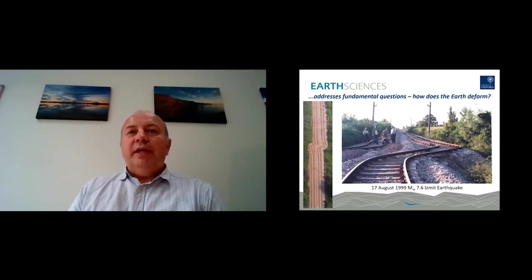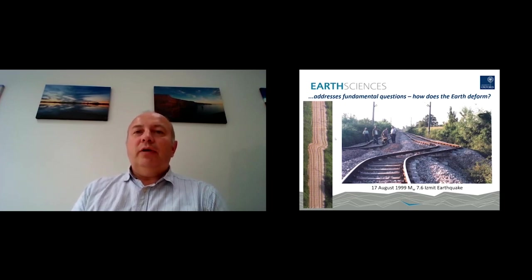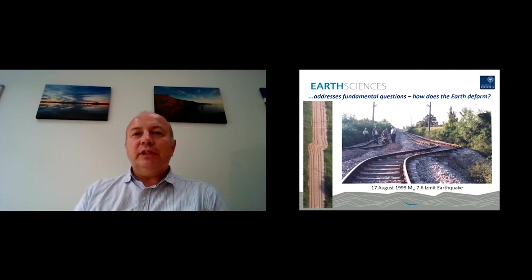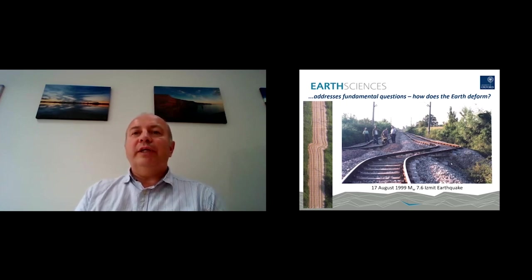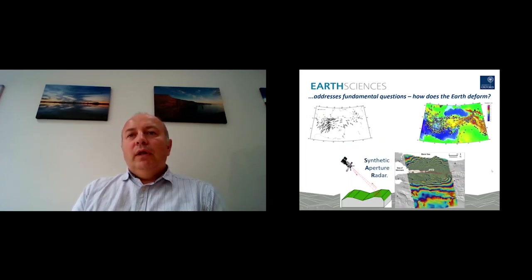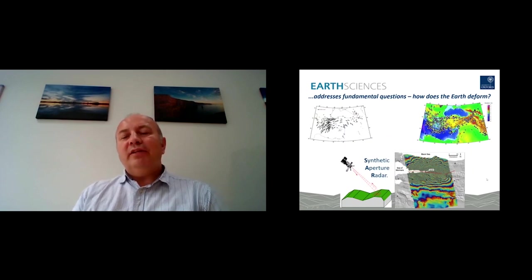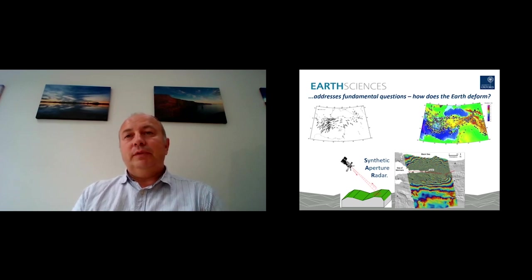We're also interested in natural hazards. So here we have an example from a 1999 earthquake in Turkey, the Izmit earthquake, where you can see that the ground at the top of the photograph moved to the right relative to the ground at the bottom of the photograph, and that was due to an earthquake on a major fault that goes through here. Now, our ability to understand and map these hazards has been massively improved in recent decades by the advent of high-precision satellite measurements.